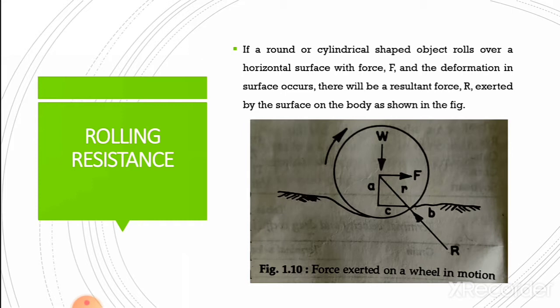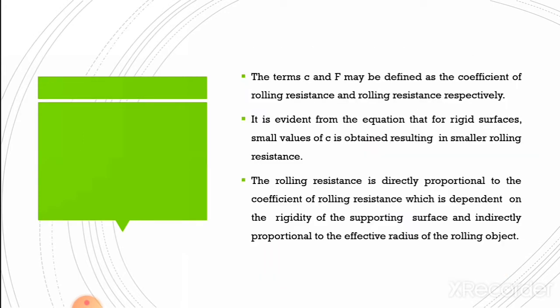Rolling resistance is one of the frictional properties of biological materials. If a round or cylindrical shaped object rolls over a horizontal surface with force F and deformation in the surface occurs, there will be a resultant force capital R, as shown in the figure, exerted by the surface on the body. This concept is shown in the diagram of force exerted on a wheel in motion. The term C and F may be defined as the coefficient of rolling resistance and rolling resistance respectively. For rigid surfaces, small values of C are obtained, resulting in smaller rolling resistance.